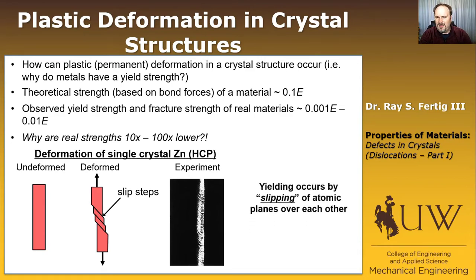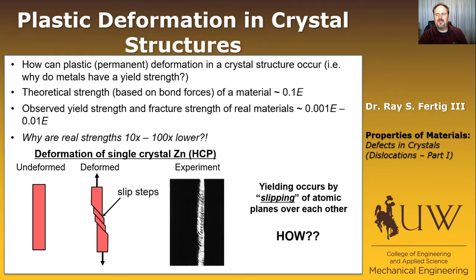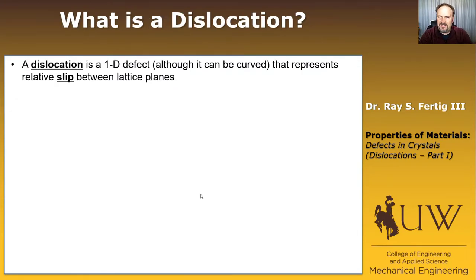So that is how plastic deformation occurs in a metal. Yielding — that permanent deformation — occurs by slipping atomic planes over one another. But how does one plane slide over the other? If all the bonds broke, you'd just have fracture — two pieces. Somehow one plane slides over the other and the material still retains effectively the same stiffness as before it slid. The mechanism is actually a dislocation.